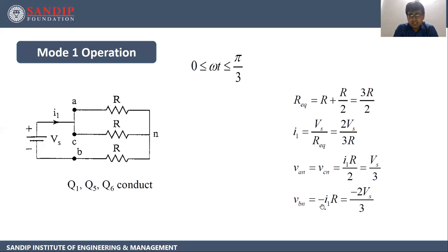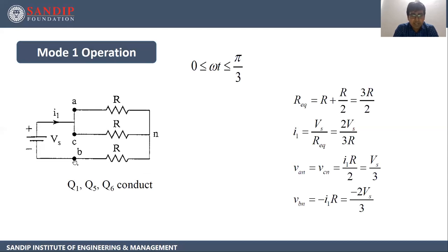Vbn is negative because the current is going to the negative of the voltage source, and there is no division of current as there was for the other phases. So Vbn = −i1 × R = −(2Vs/3R) × R = −2Vs/3.